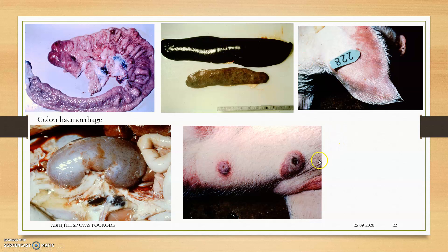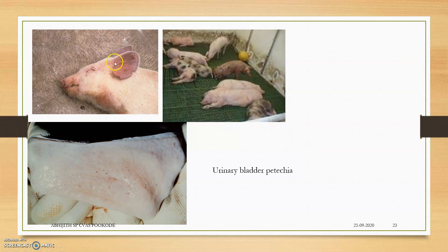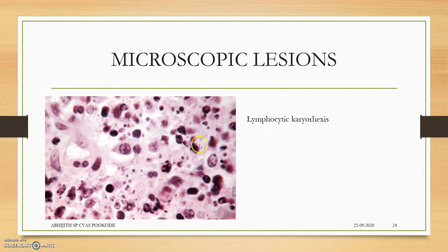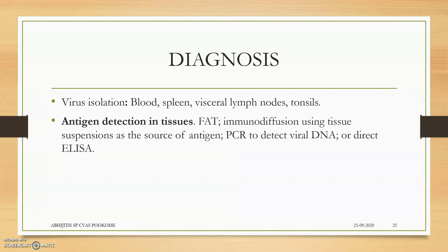Diagnosis. The urinary bladder shows small petechiae. Microscopic lesions mainly include lymphocytic karyolysis and intracytoplasmic inclusion bodies, which can be found in many cells. Diagnosis is through virus isolation from blood, spleen, visceral lymph nodes, tonsils, etc., or antigen detection in tissues by ELISA, PCR, RT-PCR, virus neutralization, etc.